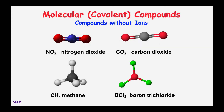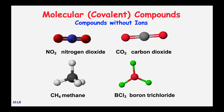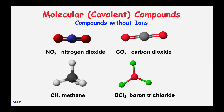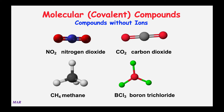In addition to metals with non-metals—broken down into fixed charge metals and variable charge metals—there is another set of compounds that only involves non-metals. These are called molecular or covalent compounds. These are compounds without ionic charges—no positives, no negatives. Examples include nitrogen dioxide, carbon dioxide, methane CH4, and boron trichloride. These are all covalent molecules involving only non-metals—no iron, no sodium, no chromium, no uranium.